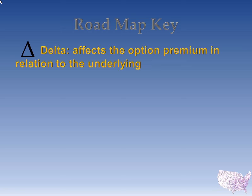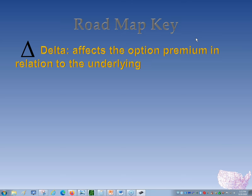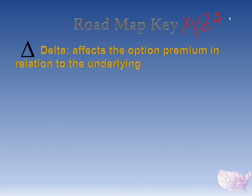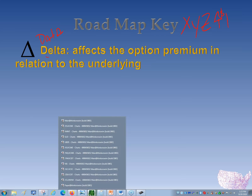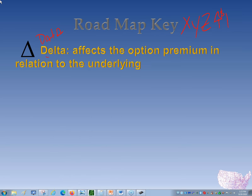Delta is one of the most important Greeks that everybody talks about. Delta is the effect on an option premium in relation to what the underlying is doing. Basically, if xyz goes up by one dollar, delta is the number that affects that option premium at the strike we're looking at. Delta also tells us probability and five different things overall, but for right now I want to narrow it down to just how it's going to affect those option premiums.